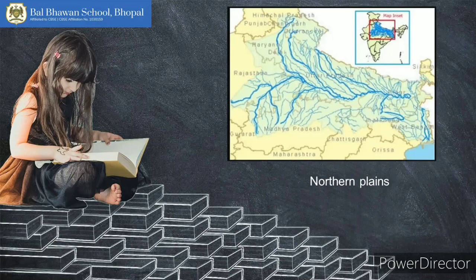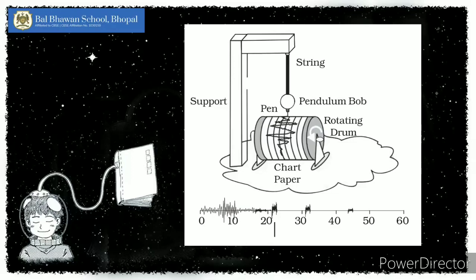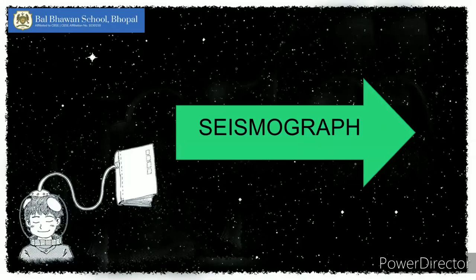Now we'll move to the next section. In this part you will be seeing pictures and you have to identify what you see. These are also carrying one mark each. So the first picture — identify this instrument. What is its name? It is a seismograph, and it is used to measure the magnitude of earthquakes. Excellent!